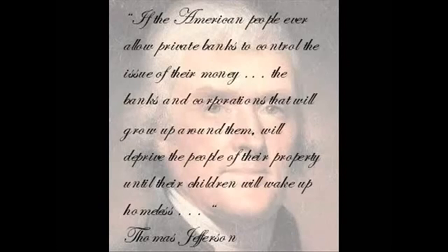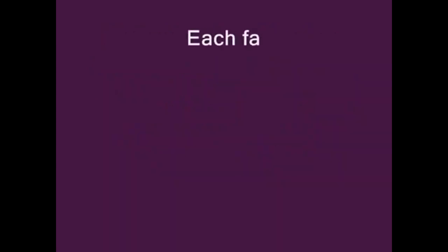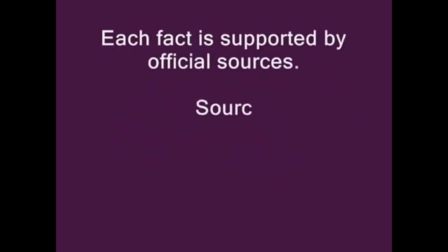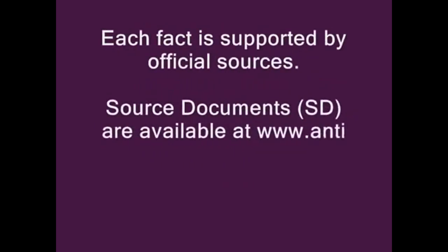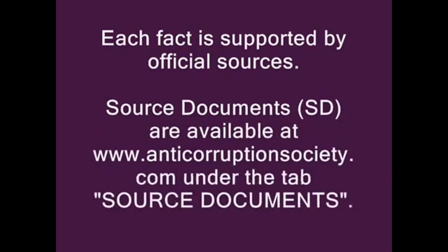If the American people ever allow private banks to control the issue of their money, the banks and corporations that will grow up around them will deprive the people of their property until their children will wake up homeless. Following is a timeline demonstrating when and how a private central banking cartel got control of the government, the people, and the assets of the United States. Each fact is supported by official sources. Source documents are available at www.anticorruptionsociety.com under the tab Source Documents.